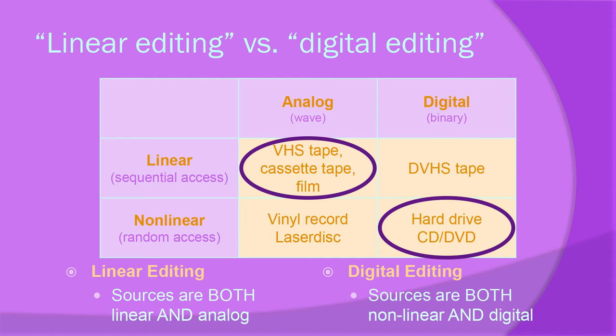So what does this mean for editing? When people say linear editing, they usually mean using video and audio sources stored on linear and analog mediums. When they say digital editing, they mean using sources that are both non-linear and digital. The difference matters if you want to understand why the history of AMVs is the way it is, because if you compare the amount of work involved, you'll soon realize that linear editing is really, really hard.